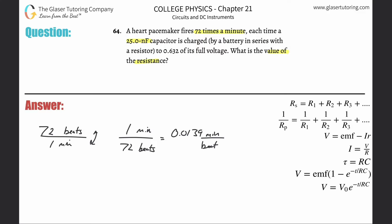We don't want minutes — we need seconds. So multiply by 60 seconds per minute, and we get 0.833 seconds per beat. That should make sense.